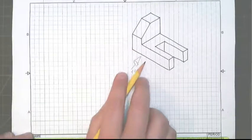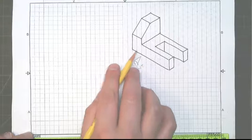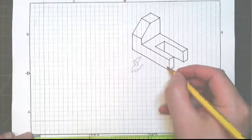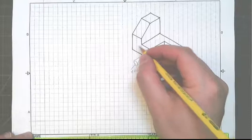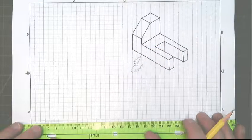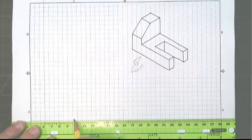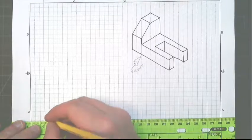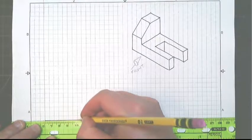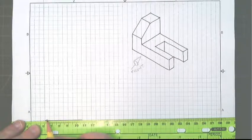Since that's the front, we're going to count the number of squares. That's one, two, three, four, five, six, seven, eight long. So we can make an object line that is eight long. One, two, three, four, five, six, seven, eight.